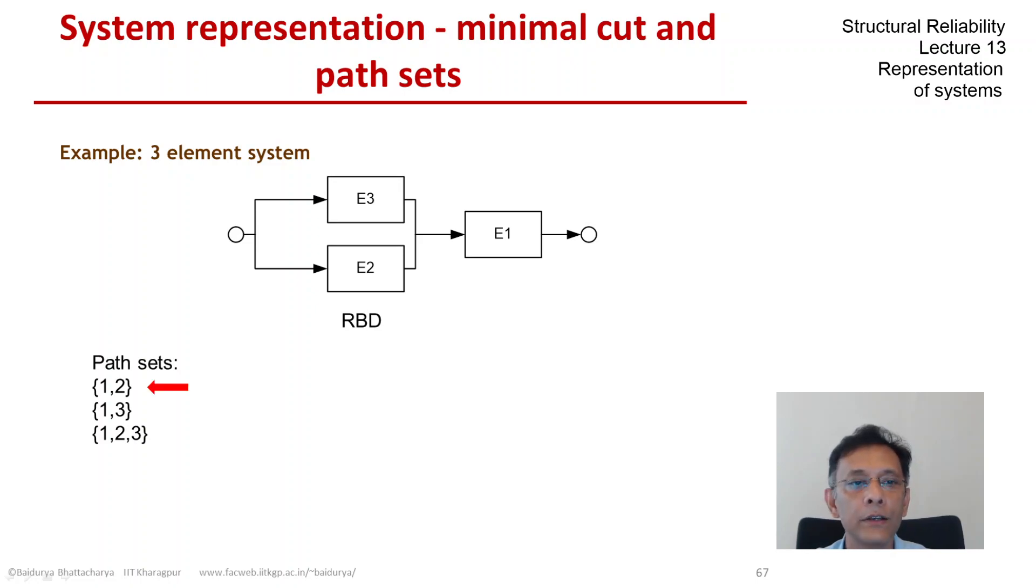The first one, because if you remove any one of them, it no longer remains a path set. The second one is also a minimal path set. So these first two that I have marked with the red arrows are the minimal path sets. But the third one is not a minimal path set.